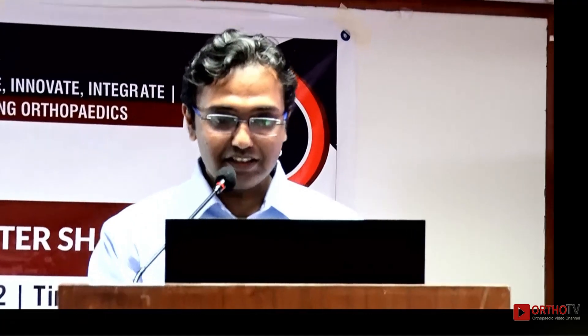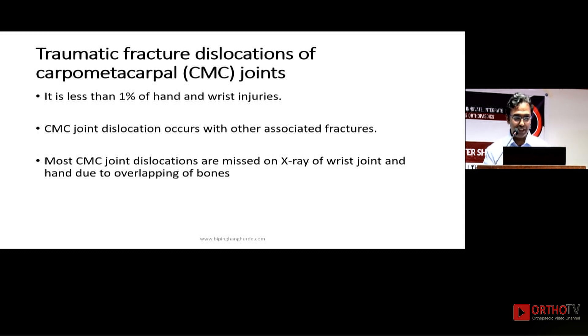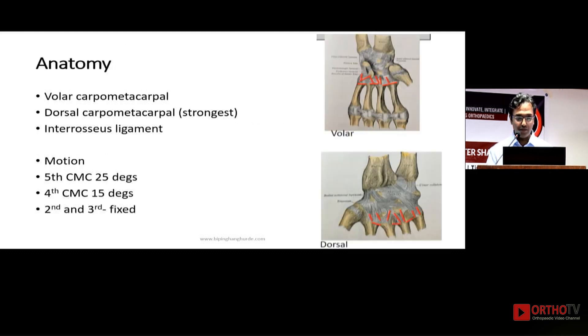Carpometacarpal dislocations — covering those other than the thumb. These are less than 1% of hand and wrist injuries and they occur with other associated fractures. Most of the dislocations are missed on X-rays of the wrist and hand due to overlapping of the bones.